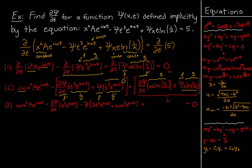Moving to step three: the first term i omega x squared a e to the i omega t is done. For the second term, ∂ψ/∂t times t cubed e to the kxt stays, with the negative sign distributed. We still have ψ factored out, and now we take the derivative of t cubed e to the kxt treating t cubed as f and e to the kxt as g: f prime is 3t squared times e to the kxt, plus kx times e to the kxt as g prime, times t cubed as f.